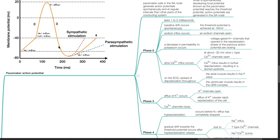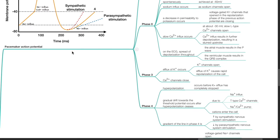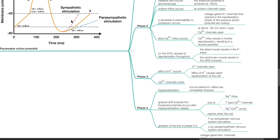During phase 4, there is hyperpolarization and occurs before potassium efflux has completely stopped. Gradual drift towards the threshold potential occurs after hyperpolarization ceases due to sodium influx, T-type calcium channels, and sodium calcium pump. Cations enter the cell. The gradient of the line in phase 4 is increased by sympathetic stimulation and decreased by parasympathetic stimulation.